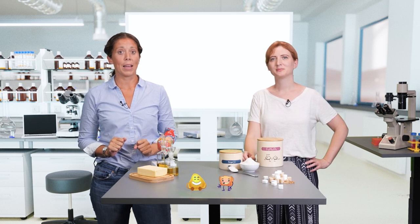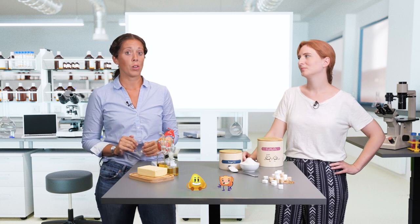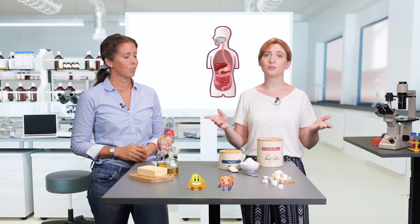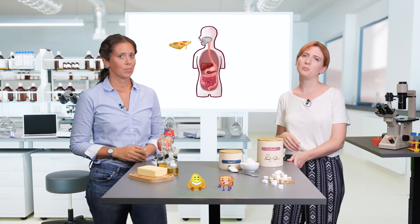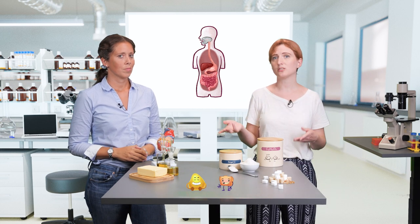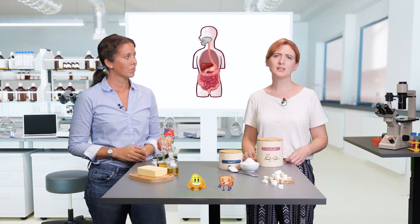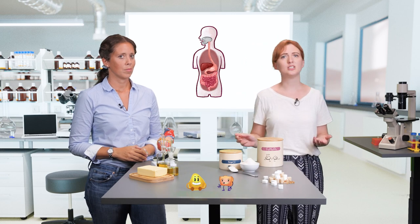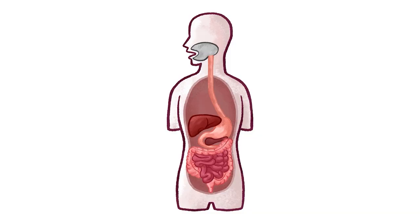We already introduced you to the main characteristics of the metabolic syndrome and insulin. Now we would like to talk about the different organs that play a role in our metabolic response to nutrients. Let's follow the course of insulin once it's released after a meal, because it is interesting how different organs react. The organs that take part in this means of communication are called metabolic tissues.